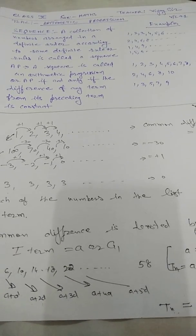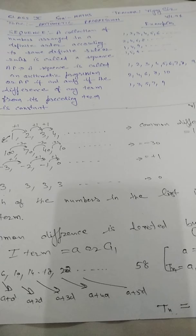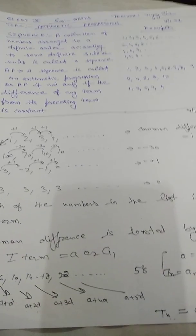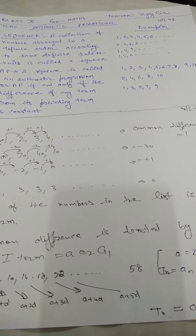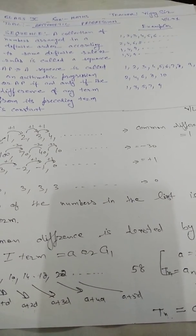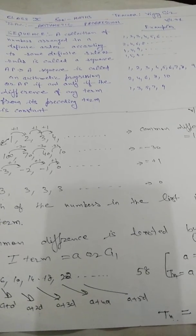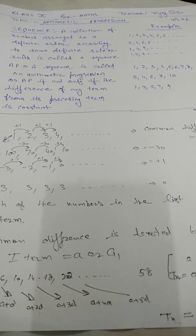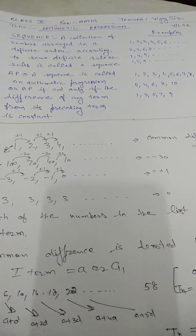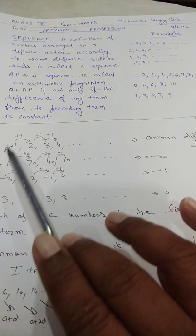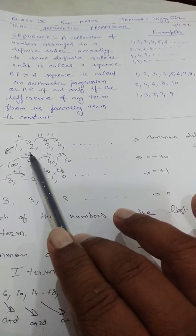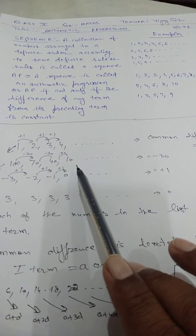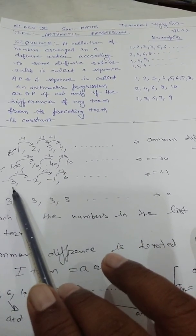Hello students, namaskar, welcome. Now we learn the next part of Arithmetic Progression. First of all, we take some examples: 1, 2, 3, 4, and so on; 100, 70, 40, 10; next is minus 3, minus 2, minus 1, and so on.